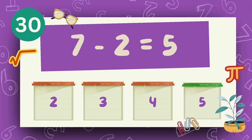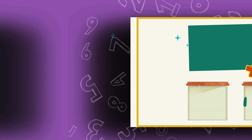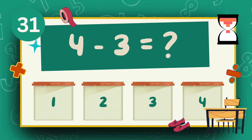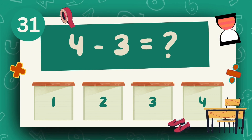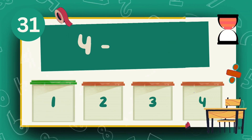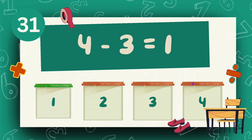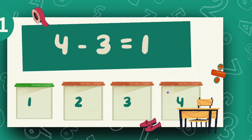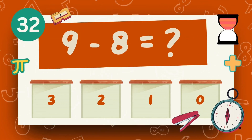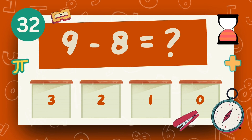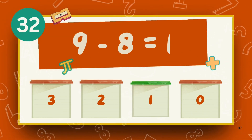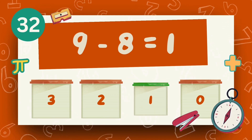What is 4 minus 3? The answer is 1. What is 9 minus 8? The answer is 1.